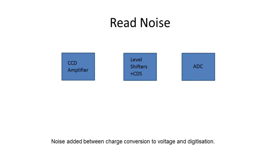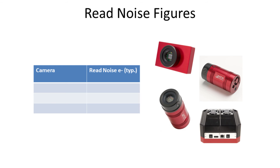The read noise can be defined as the noise added between the charge conversion — the conversion of electrons into a voltage — and the digitization phase. If we look at some values from our cameras, they really are class-leading. We've got values for the 420 of just 3 to 4 electrons, up to the Infinity — an uncooled camera with faster readout rates — at only 6 electrons worth of read noise. For CCDs, these are very, very good values indeed.